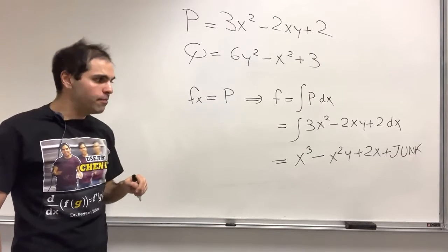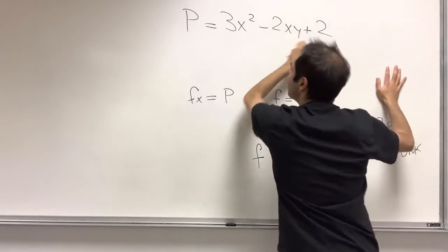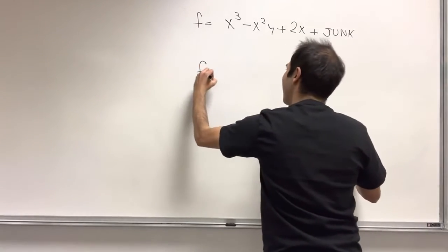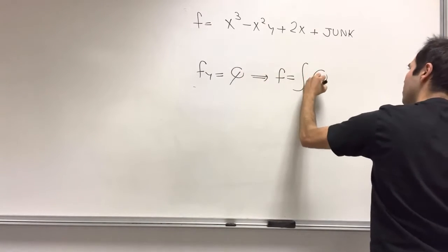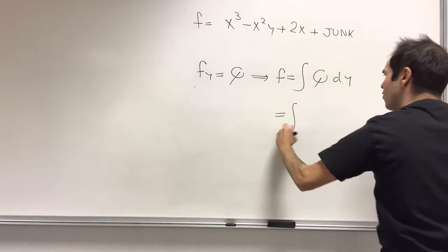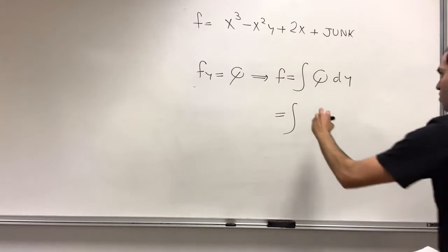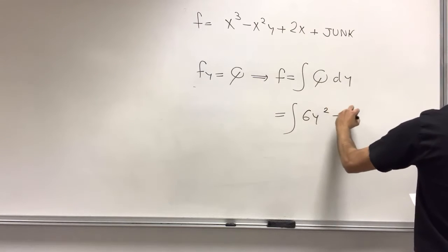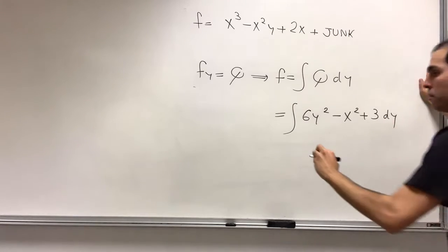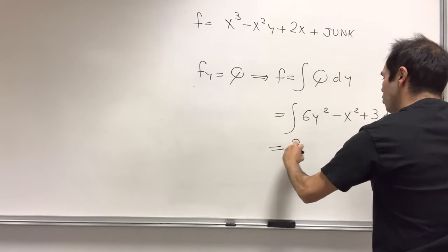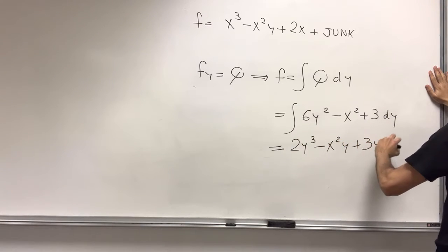And now we just want to play the same spiel with Q. So f is this, and then, so now what we get, f_y is Q, so f is the integral of Q dy, which now becomes, so Q is 6y squared minus x squared plus 3 dy, which then becomes 2y cubed minus x squared y plus 3y plus some junk.